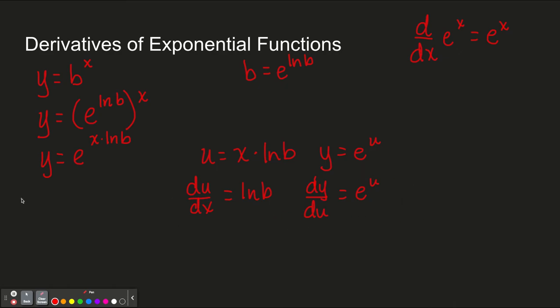All right, so now we've taken the derivative here. So we have dy dx, which equals the product of these two things: the natural log of b times e to the u. And u was x times the natural log of b.